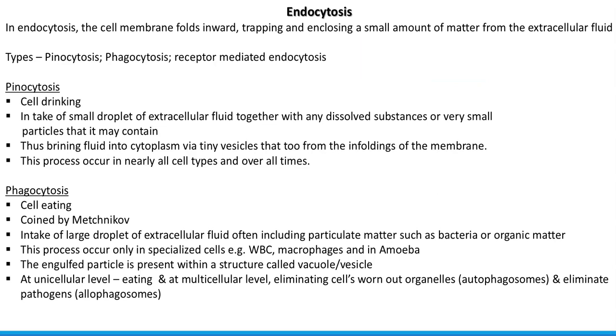There are three different types of endocytosis documented in living organisms. These include pinocytosis, phagocytosis, and receptor-mediated endocytosis.